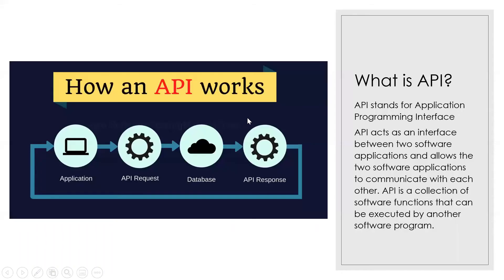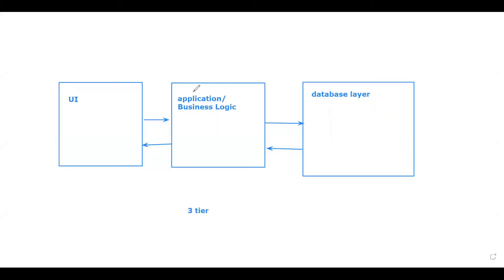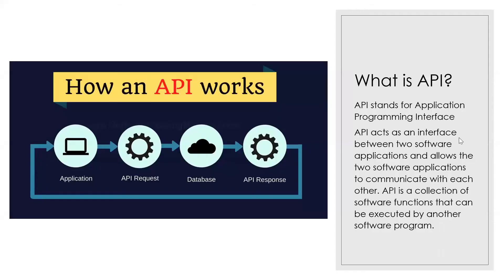What is API and how does it work? API works on the application layer — the business logic layer. API stands for Application Programming Interface. API acts as an interface between two software applications and allows them to communicate with each other. API is a collection of software functions that can be executed by another software program.